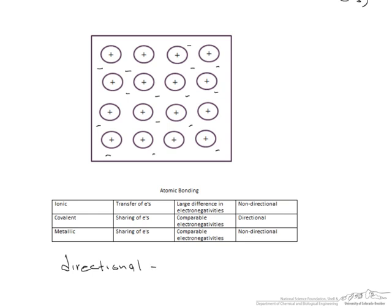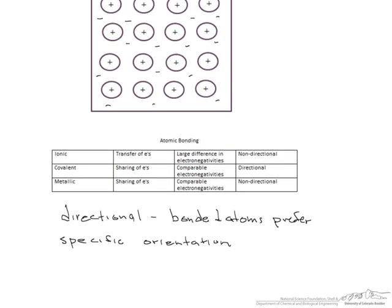And this is when bonded atoms prefer specific orientations. In other words, they have a definite shape. And if you look at the different types of bonding, you notice the only type of bonding that is directional is covalent, and hopefully you remember your VSEPR structures from chemistry.